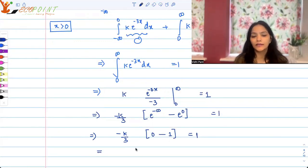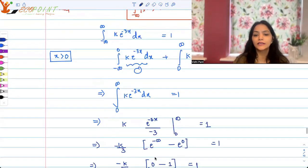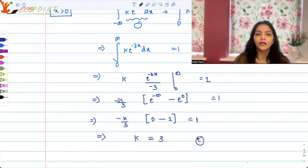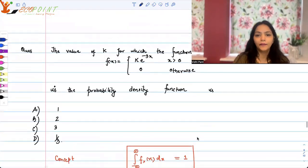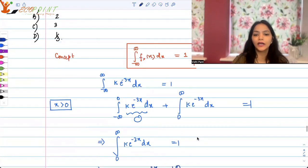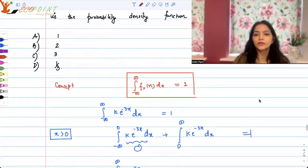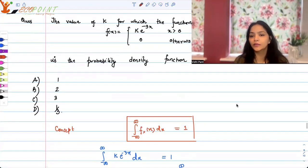Minus minus cancels out, and what you get is that k is actually equal to 3. So the correct answer is k should be 3, which is option c. Now what is the interesting thing about this question? If you've done probability distributions in detail, you must have done the exponential distribution for exponential random variables.